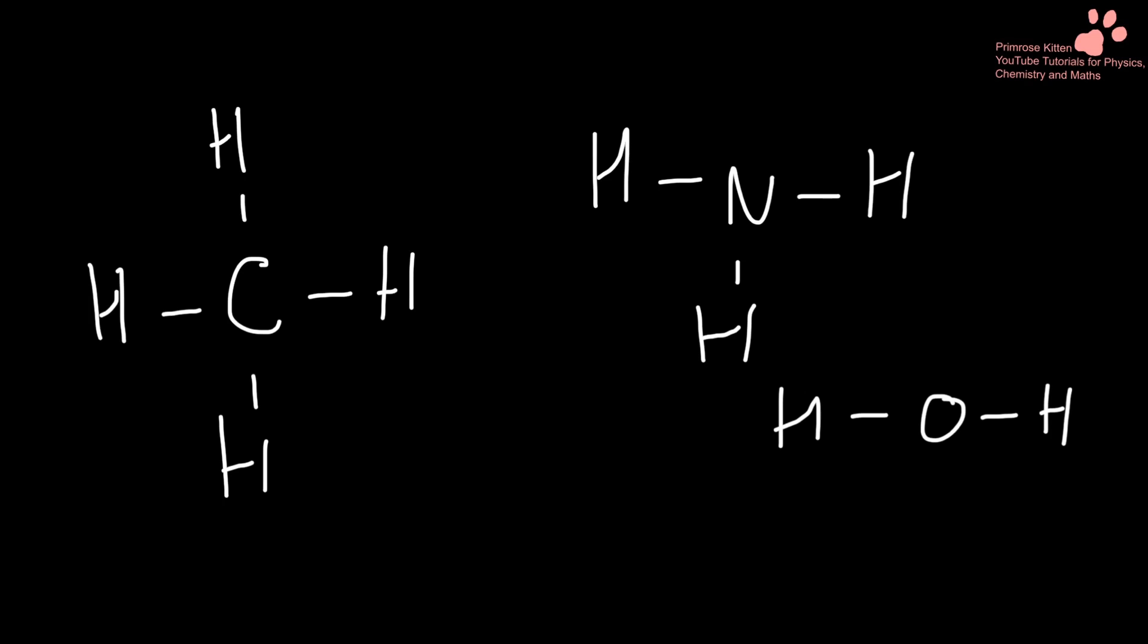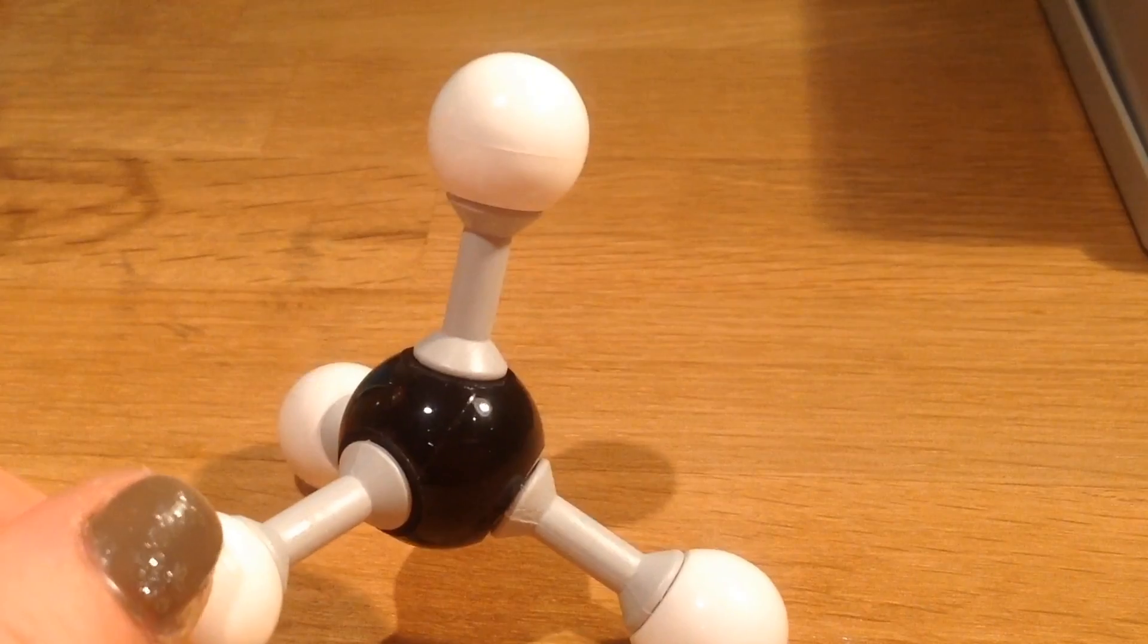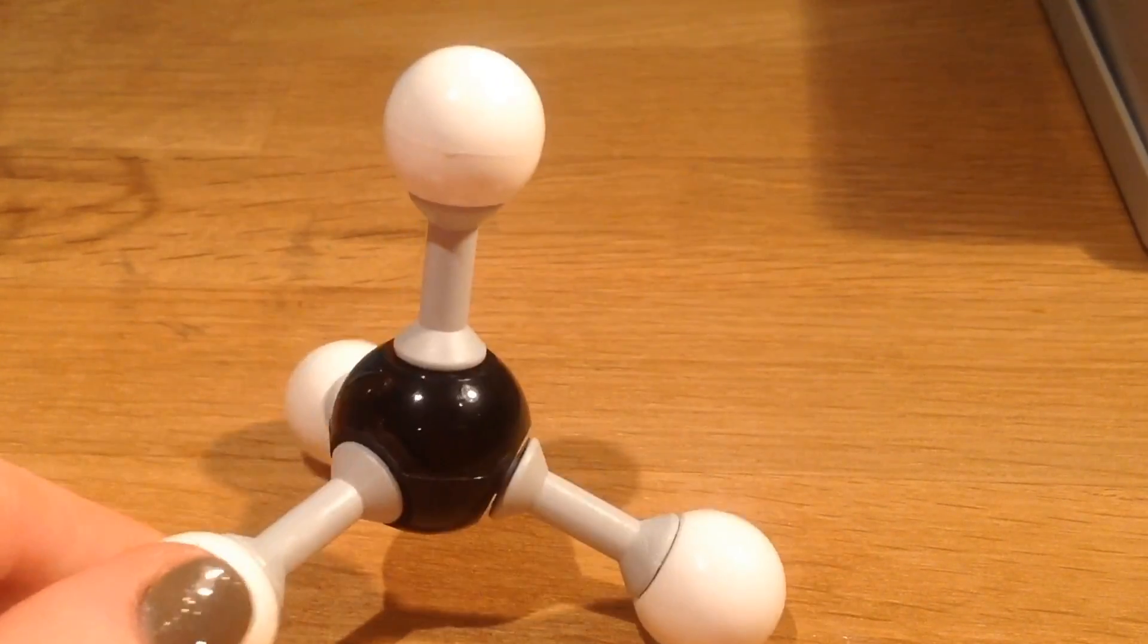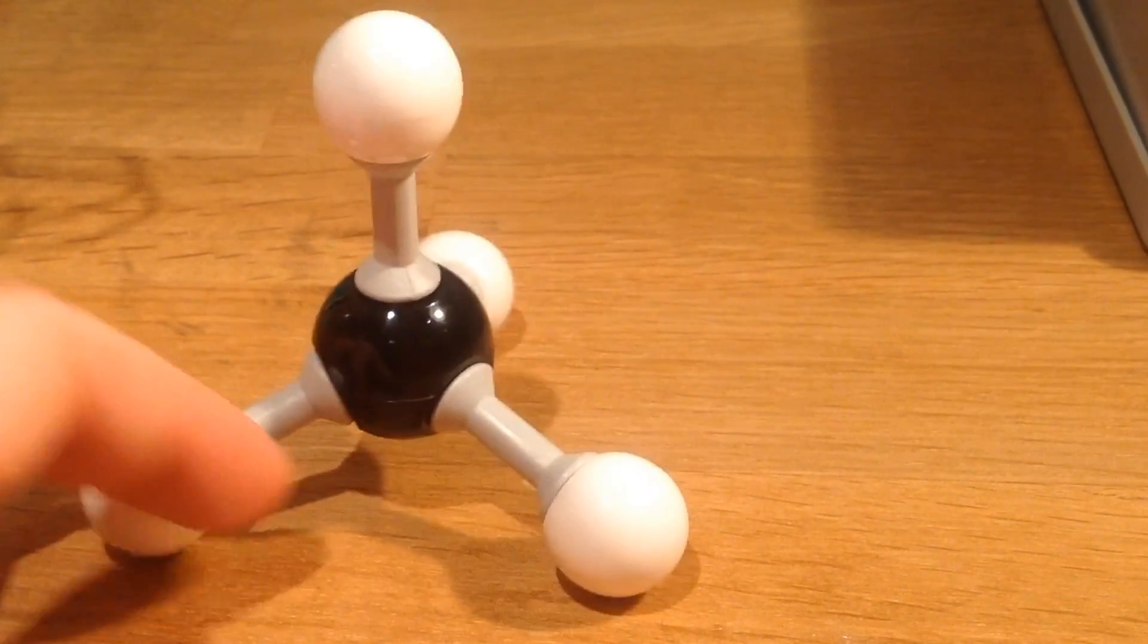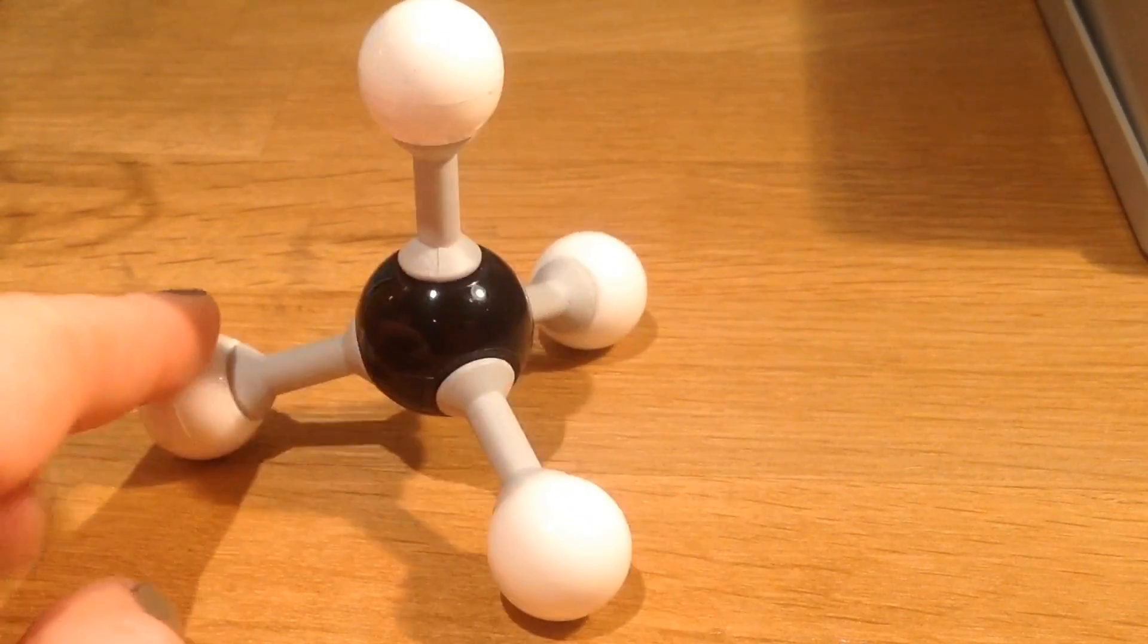Previously, you might have drawn compounds that looked a bit like this. These are 2D shapes, they look very flat. Unfortunately, this is not what compounds look like in real life and we need to start drawing them properly. Here we have methane and I've used molly mods, a modeling kit for chemistry, to show you what it looks like in real life. You can see it is not flat, it is 3D.